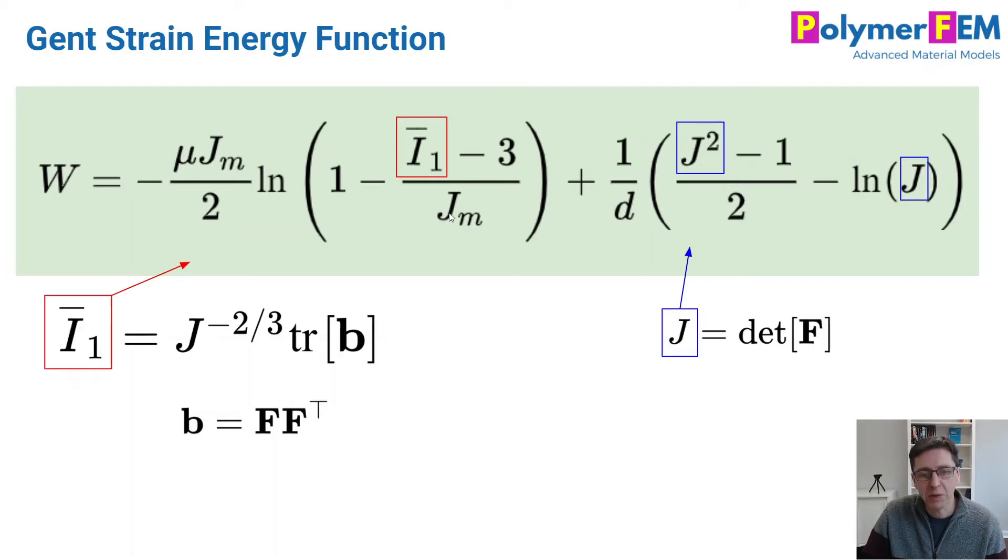and dividing that by the material parameter, Jm becomes the limiting chain stretch, because 1 minus this quantity will go to 0, and there's a logarithm of it. So that's why this gives it a finite stretchability in this case, when I1 bar in this case reaches the value of Jm. And mu is the initial shear modulus, and then there is just a volumetric term to the right here.